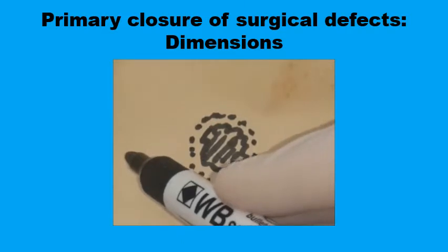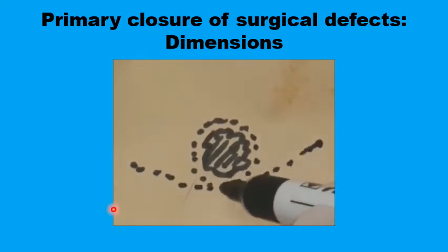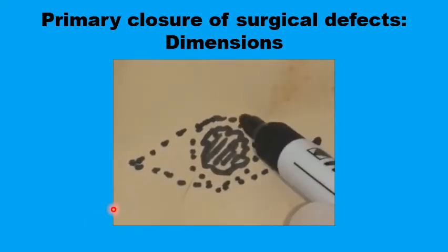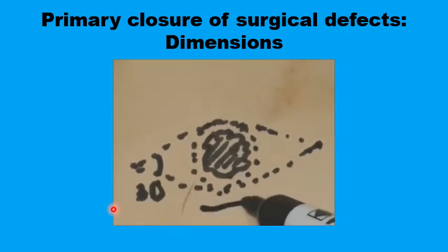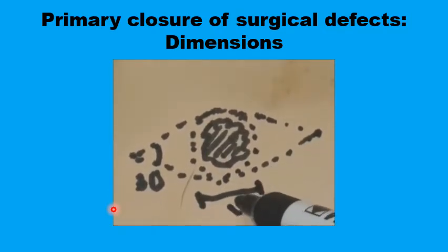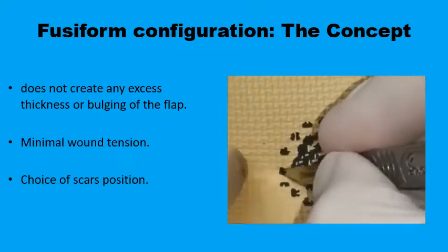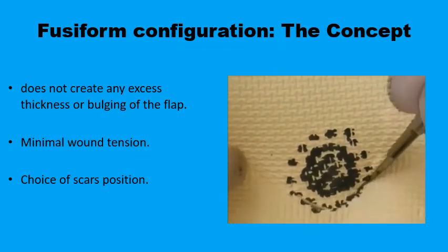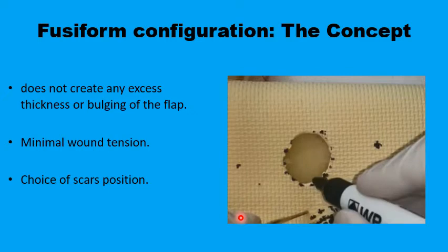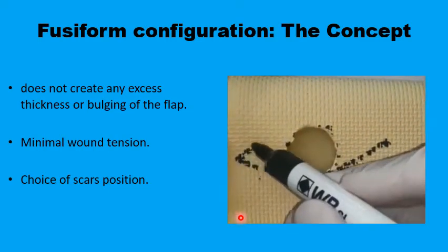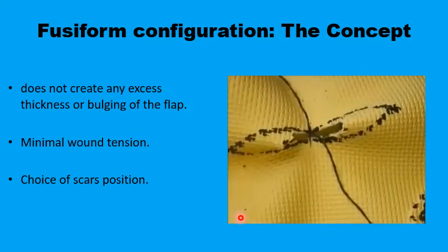Traditionally, having an elliptical or fusiform-shaped defect — or transforming a circular or square defect into one — helps achieve all these aims. The elliptical defect should have a 30-degree angle at the apex and a length-to-breadth ratio of 3 to 1. Here we demonstrate the idea behind changing a circular or square defect into a fusiform shape. We have a circular lesion together with its safety margin, now excised, and a fusiform defect is marked but not yet excised.